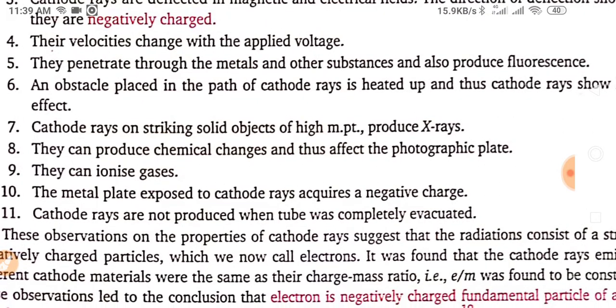Cathode rays on striking solid objects of high melting points produce X-rays. So X-rays also produced by these cathode rays. They can produce chemical change and thus affect the photographic plate. They can ionize gases. The metal plate exposed to cathode rays acquire a negative charge. Cathode rays are not produced when tube was completely evacuated. So half evacuated vacuum is needed for the cathode rays production.